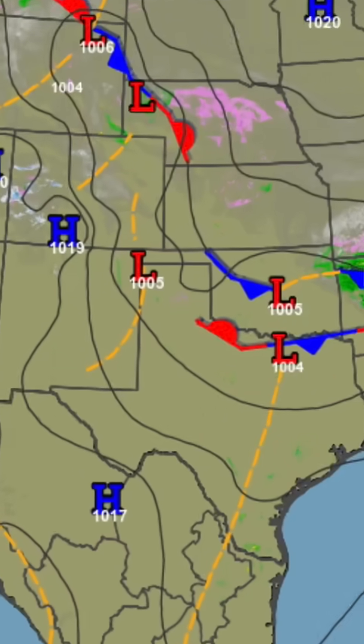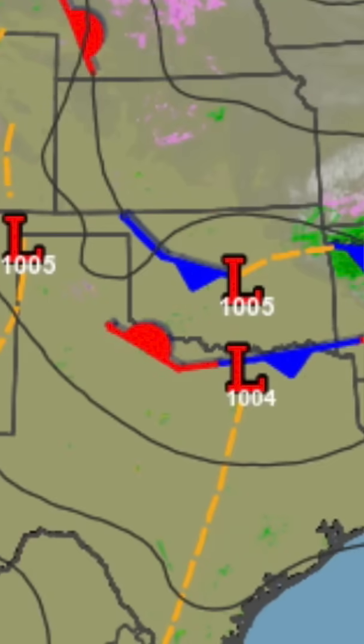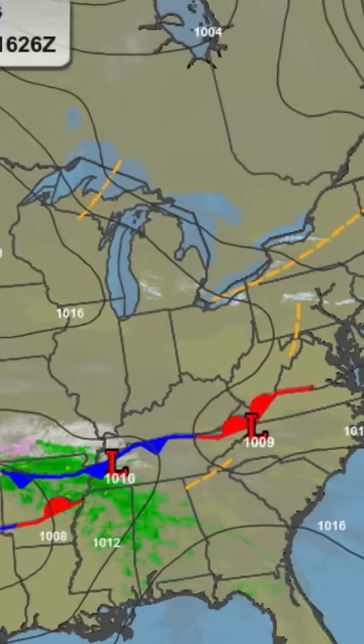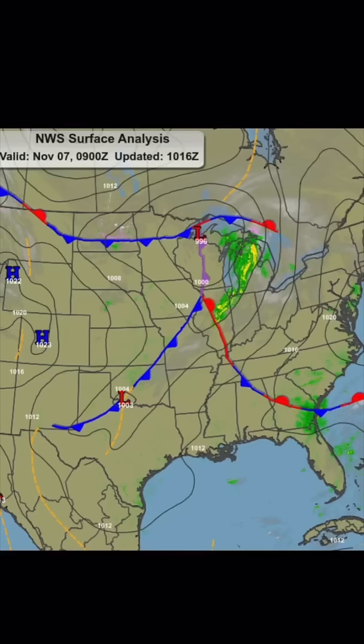First, pressure systems. Blue highs are usually your friend — these indicate better weather with fewer surprises. Red lows: if you see these, be suspicious. Lows are where the weather happens. Yellow troughs: if your flight path is in the vicinity of one of these, use caution.